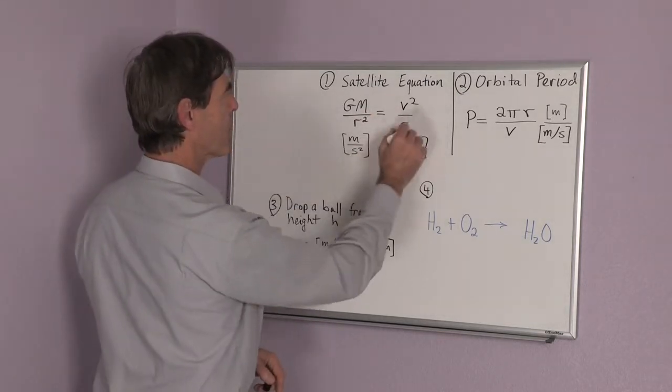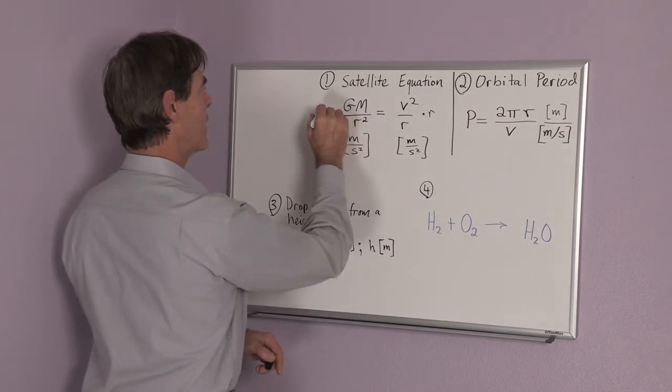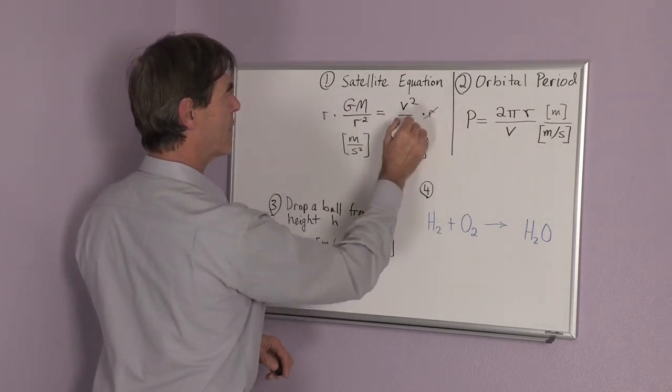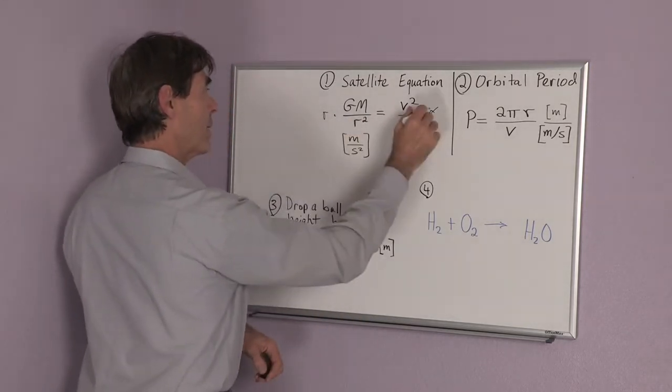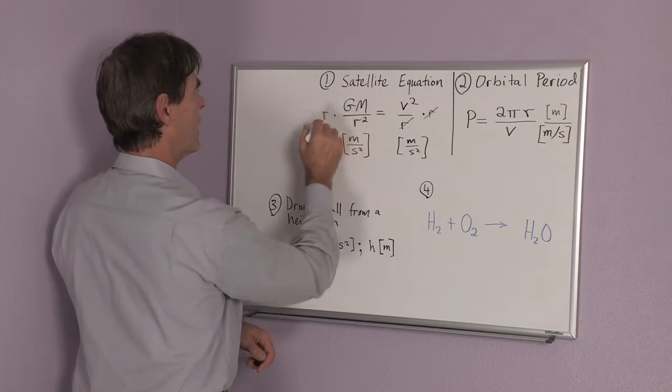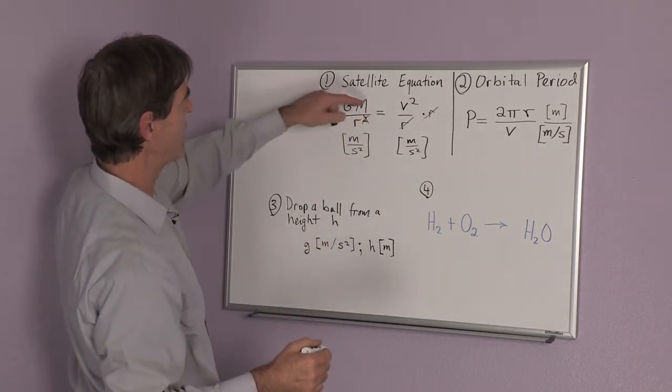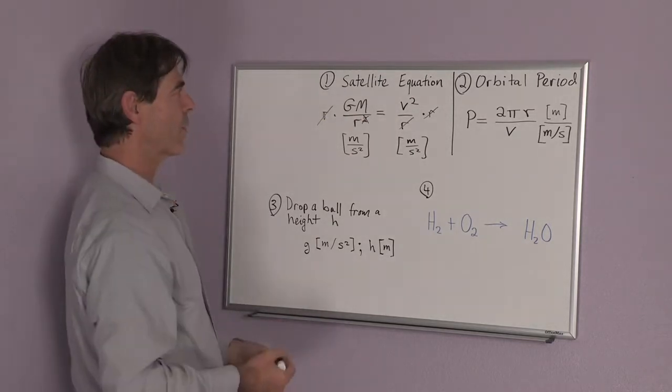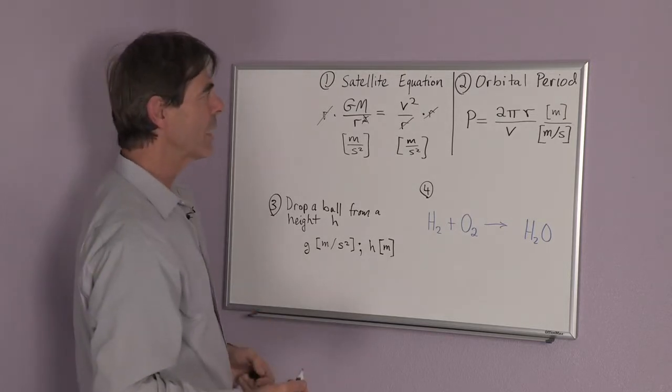For instance, I want to multiply both sides of the equation by r, and get rid of this r, because I can divide r into r squared is one r. And here I get rid of one of these r's. And so I have GM divided by r is equal to v squared. And this is the equation for the velocity of a satellite circling the Earth.